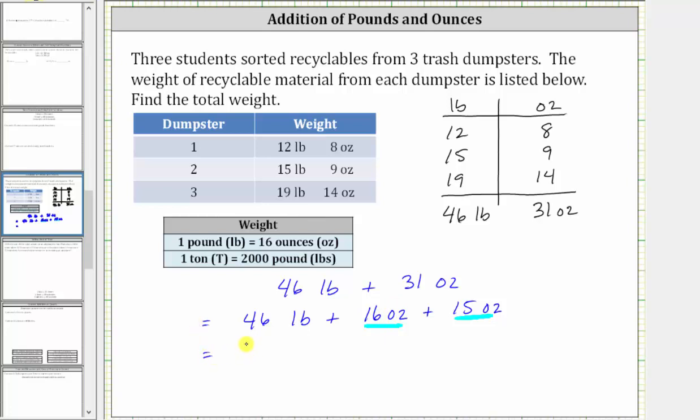Therefore, we can write this as 46 pounds plus one pound plus 15 ounces. Since 46 plus one is 47, the total weight in pounds and ounces is 47 pounds 15 ounces. We can leave this as 15 ounces because 15 is less than 16.